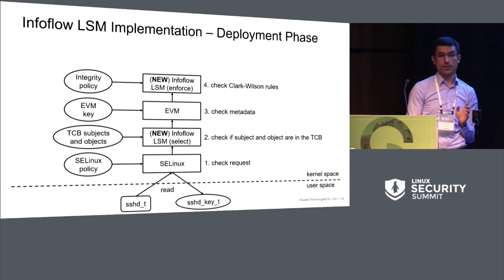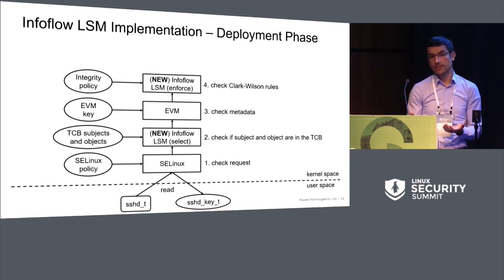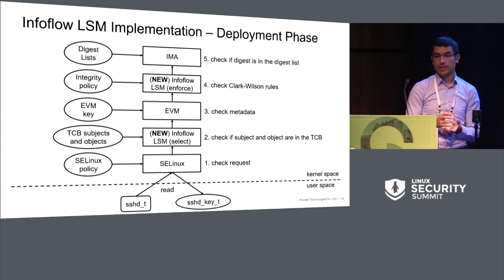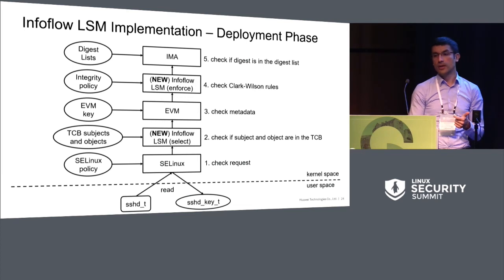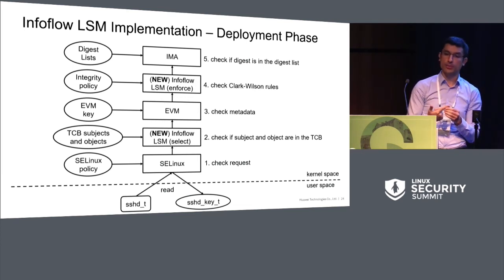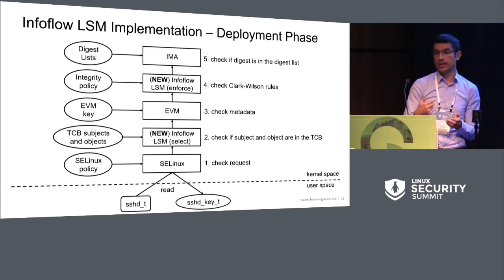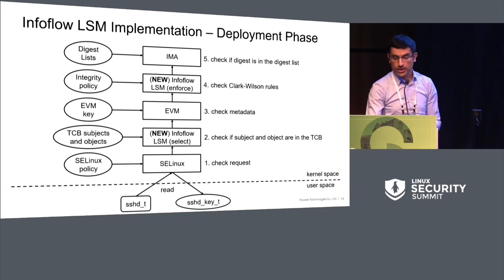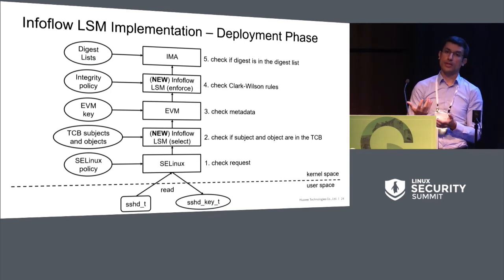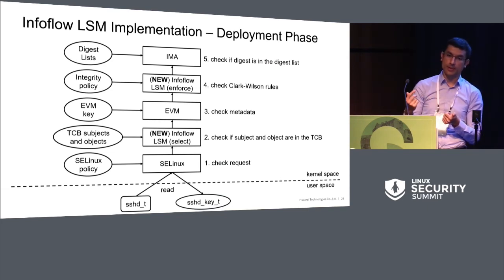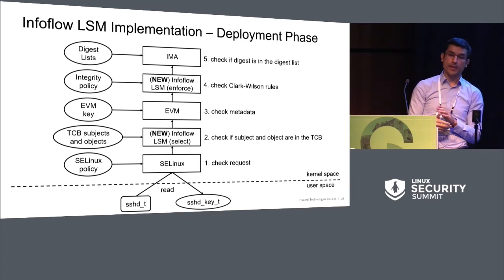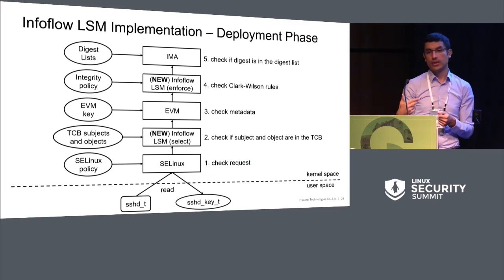We then enforce the integrity policy: if the subject is in the TCB, it can only read objects also in the TCB. Since we also need to provide which code was executed as part of the TCB, with IMA we measure the code and immutable files. For mutable files, we protect them with the integrity policy. We are not using the standard IMA policy in the sense that we provide the list of subjects in the TCB, but the filtering — which subjects must be measured — is provided by the InfoFlow LSM with the audit match. It is the new LSM which tells IMA which files should be measured.